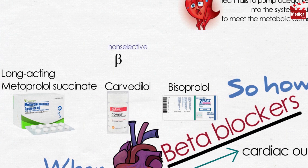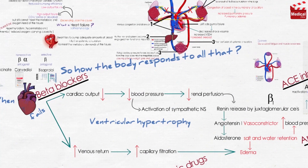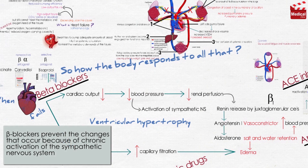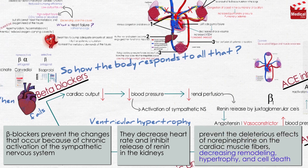Carvedilol is a non-selective beta-adrenergic receptor antagonist that also blocks alpha-adrenergic receptors, whereas bisoprolol and metoprolol succinate are beta-1 selective antagonists. Beta blockers prevent the changes that occur because of chronic activation of the sympathetic nervous system. They decrease heart rate and inhibit release of renin in the kidneys. In addition, beta blockers prevent the deleterious effects of norepinephrine on the cardiac muscle fibers, decreasing remodeling, hypertrophy, and cell death.